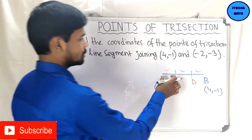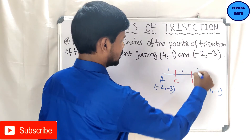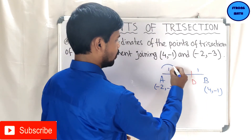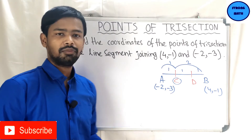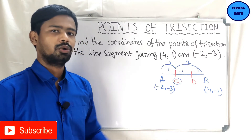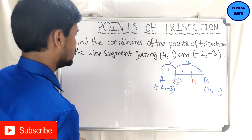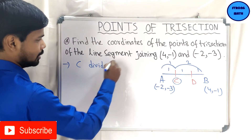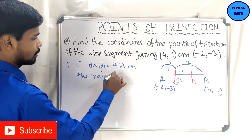Since the three parts are equal in measure, we can assume one portion each. For point C, the point C divides the whole line segment in the ratio 1:2. By applying the section formula, which I have already discussed in the previous video, we can find the coordinates of C. C divides AB in the ratio 1:2.